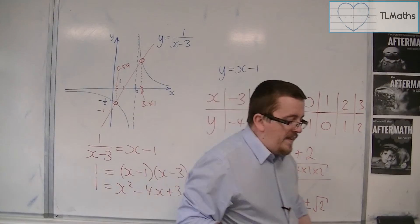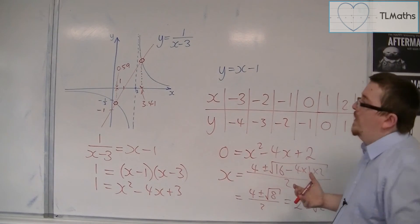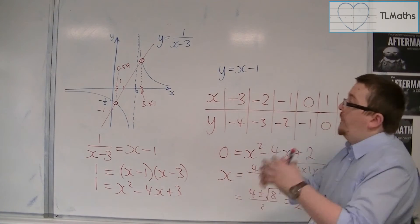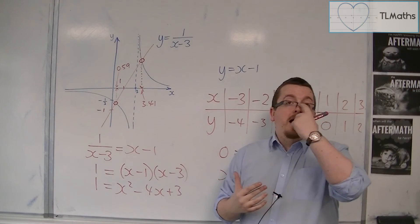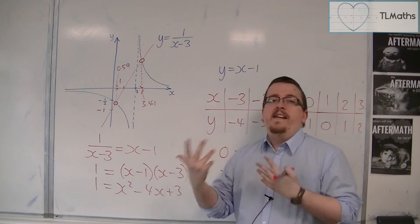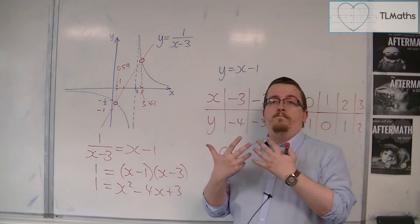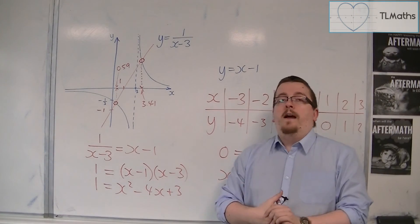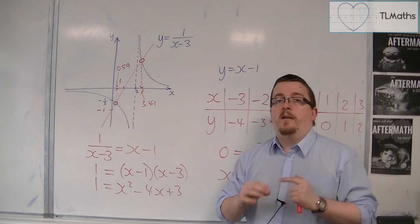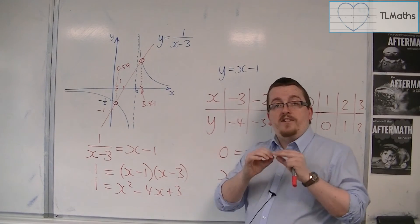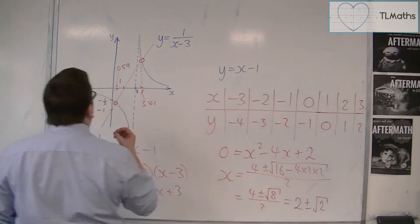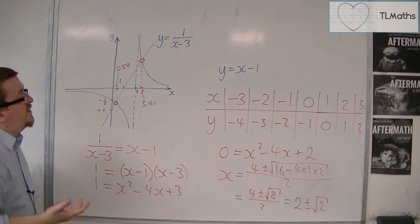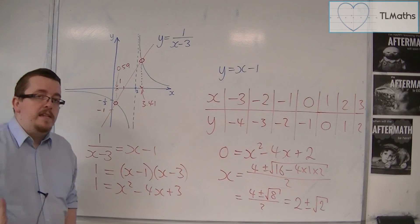So obviously, we don't have a calculator to hand, and that is why we would use a graph in order to do this. Now, the same exact technique will work when we're intersecting any curve. It could be a curve and a straight line. It could be two curves. But the same technique still applies. You find where they intersect, and then you can read off the x value.